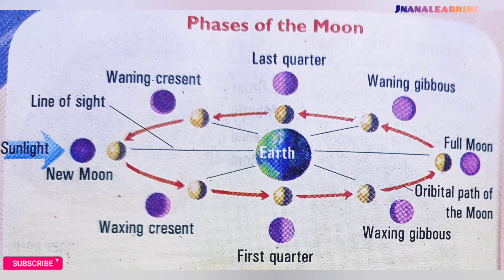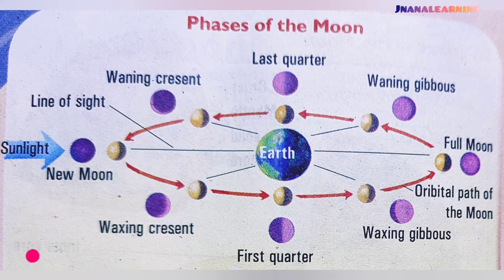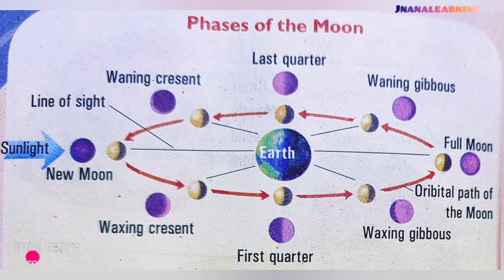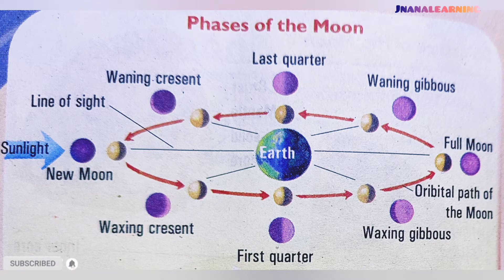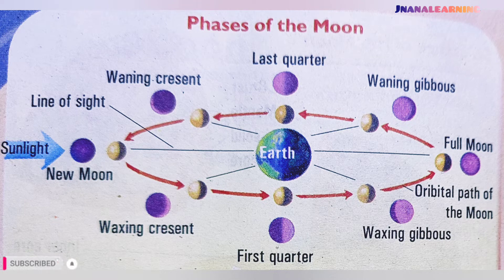The moon is a non-luminous body. Only the light of the sun reflects on the moon. The shape of the moon appears to change as it revolves around the earth. This change occurs due to changes in position with respect to the earth and the sun.